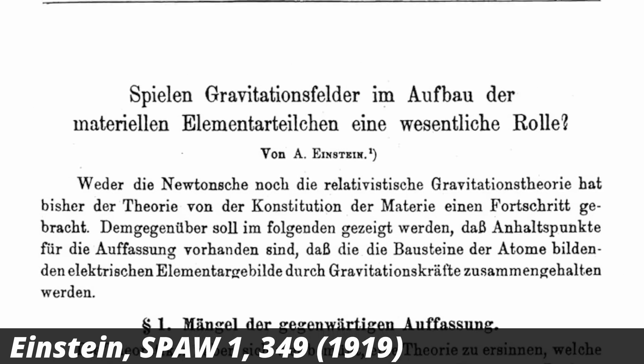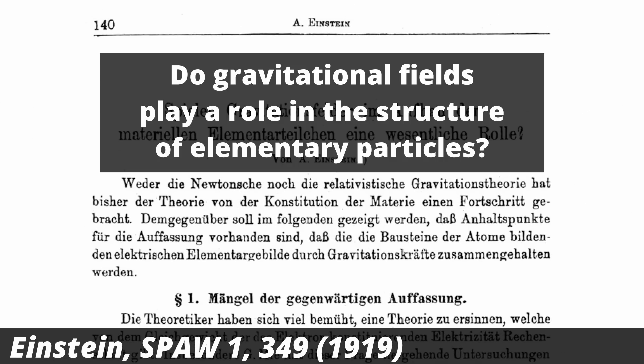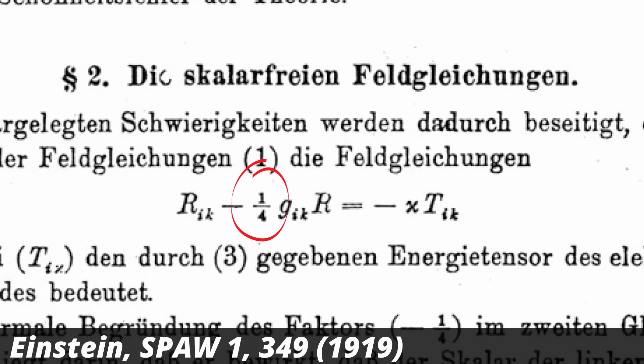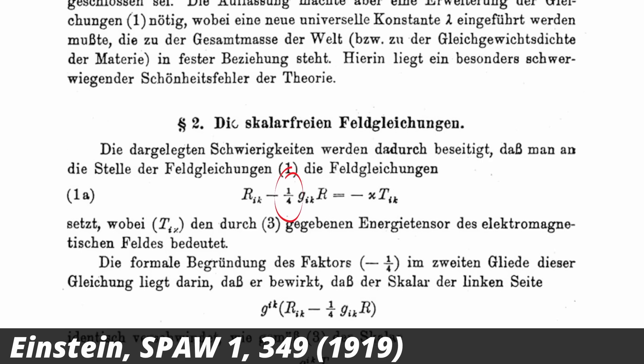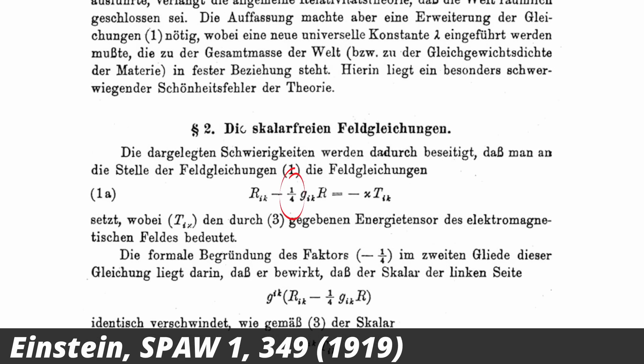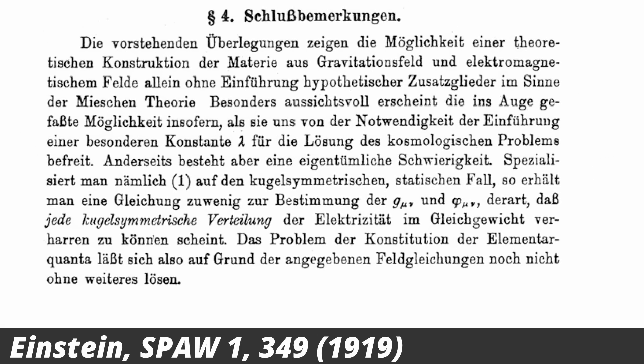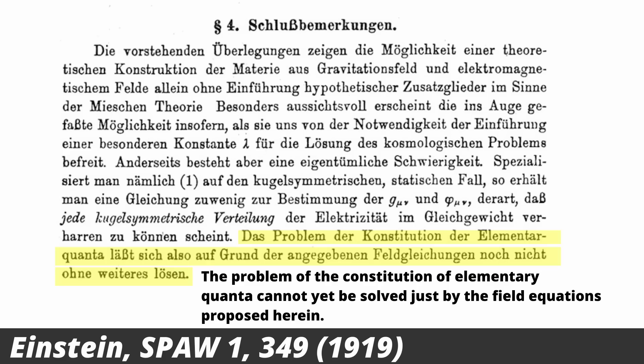In 1919, Einstein published a paper titled 'Do gravitational fields play a role in the structure of elementary particles?' The idea he pursued was to take a modified version of general relativity with different field equations, then add electromagnetism and ask whether this would give rise to solutions that could be interpreted as particles. The conclusion he arrived at is that no, this doesn't work, because the quantity that could be interpreted as mass could take on any value, whereas the particles that matter is made of have very specific values for the mass.